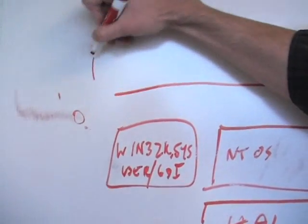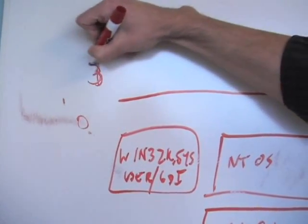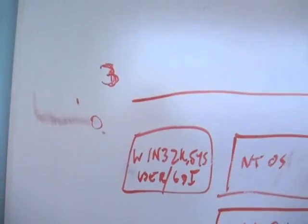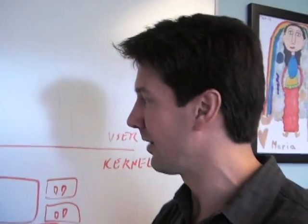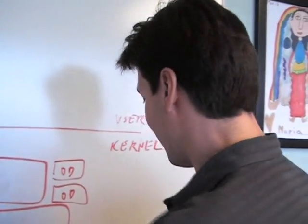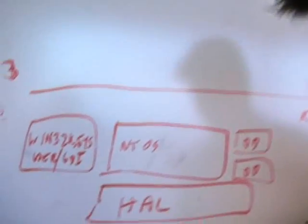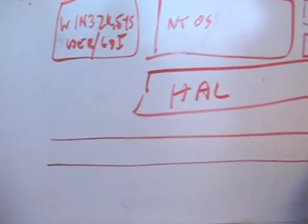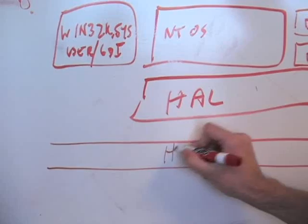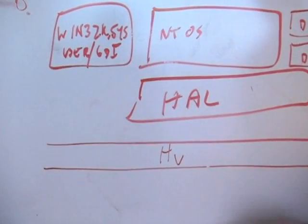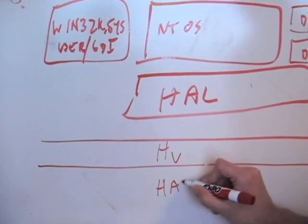It's running at ring zero and ring three of the x86 architecture. The hypervisor is running at a layer down here, just abbreviated hypervisor with the big H little V, and then on top of the hardware right here.